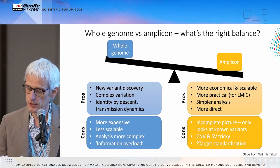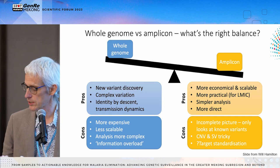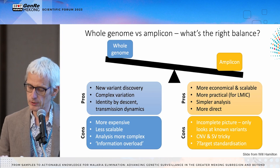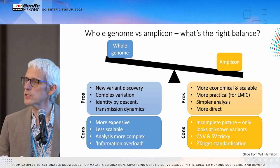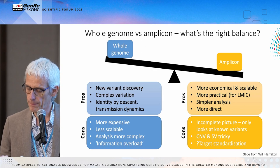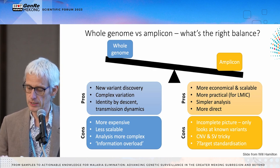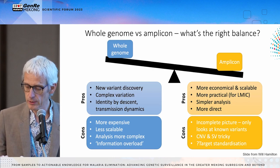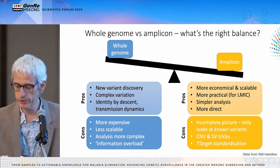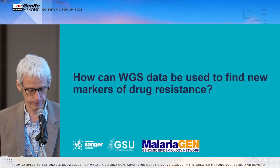It's not just drug resistance that's of interest in malaria control and elimination. There's increasing evidence that rapid diagnostic tests are failing due to mutations in parasite genomes, and this involves more complex variation involving deletions of large regions of chromosomes. But first, let's go back to the problem of drug resistance and how we might be able to detect it.